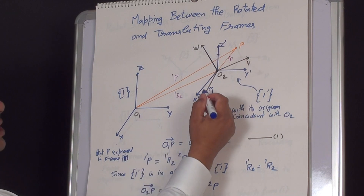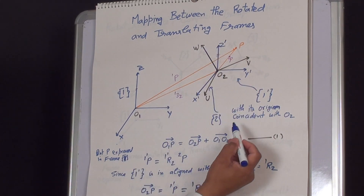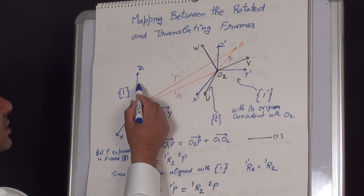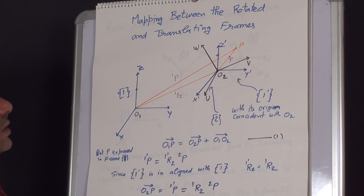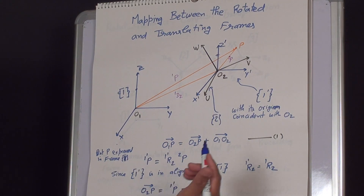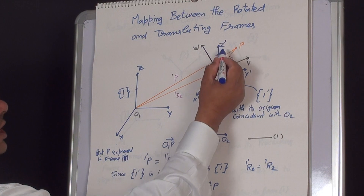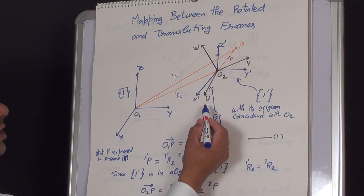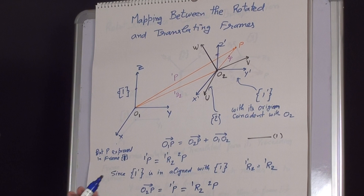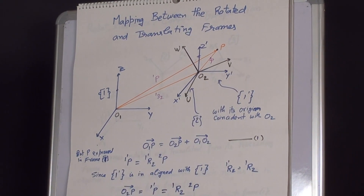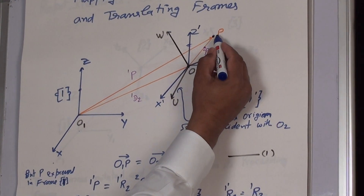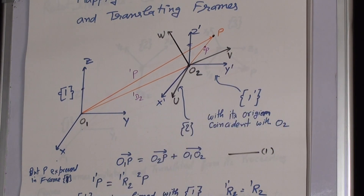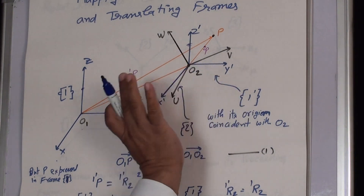Assume there is an intermediate frame with its origin coincident with o2, called Frame 1 dash, whose axes are parallel to the axes of Frame 1. Frame 1 dash has coordinates x dash, y dash, z dash, while Frame 2 is denoted with coordinates u, v, and w. The point of interest is point p — we may want to find its position with respect to Frame 1 given its position with respect to Frame 2.